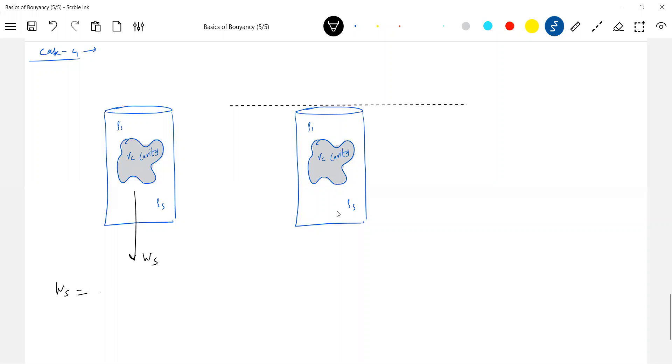What is the weight of the solid equal to? Let the density of the solid be sigma s. So sigma s into volume of solid into g. What do you mean by volume here? Volume of solid with cavity or without cavity?